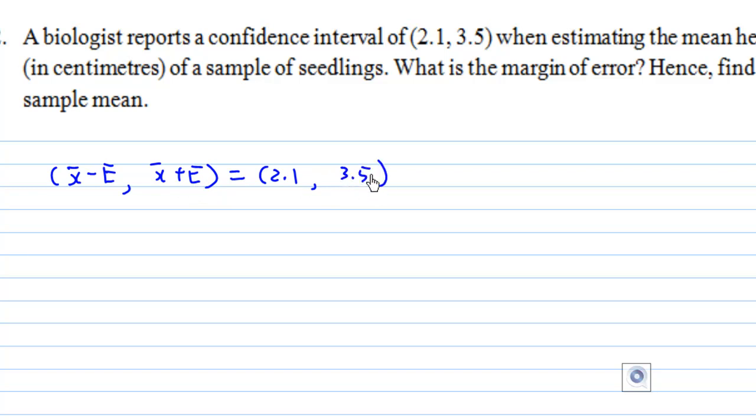So we can find that the difference 2e is equal to 3.5 minus 2.1, and you find that this is 1.4. So e is equal to 0.7. Therefore the margin of error is 0.7.